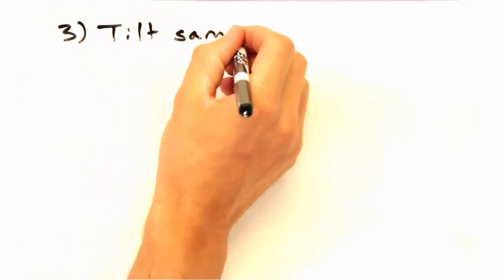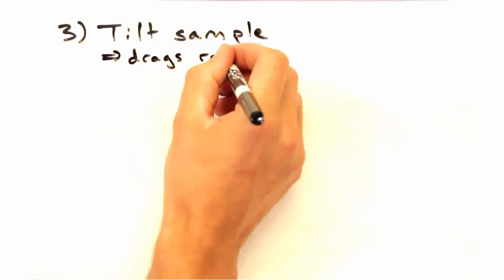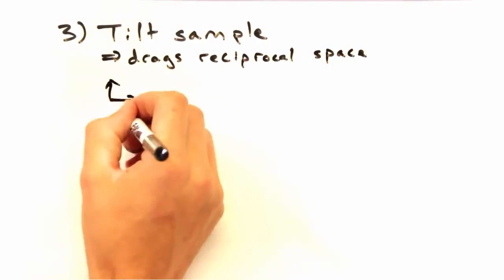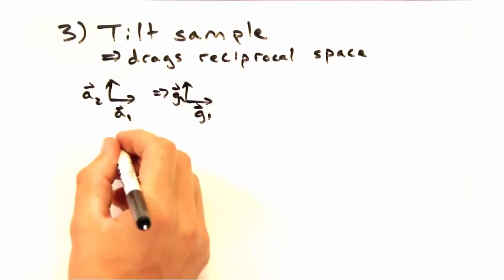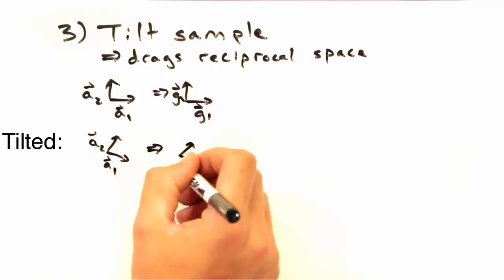Right, and the last thing we could do is tilt the sample. That is, we would have a fixed Ewald Sphere and drag the reciprocal lattice around this delta k surface we mentioned earlier.